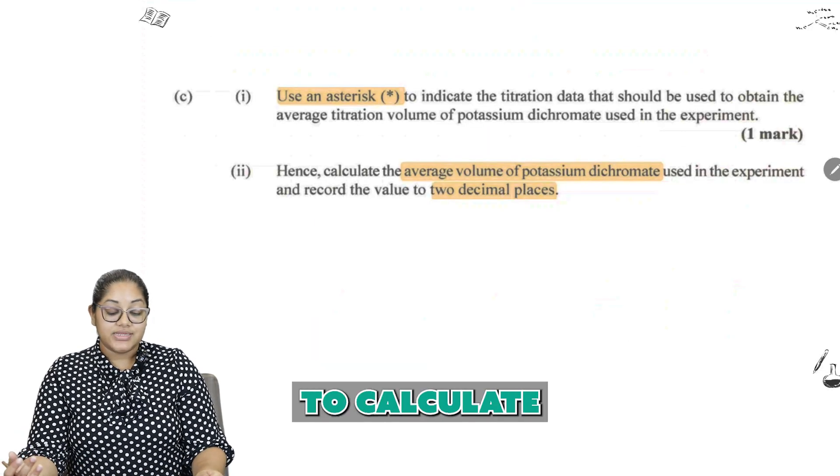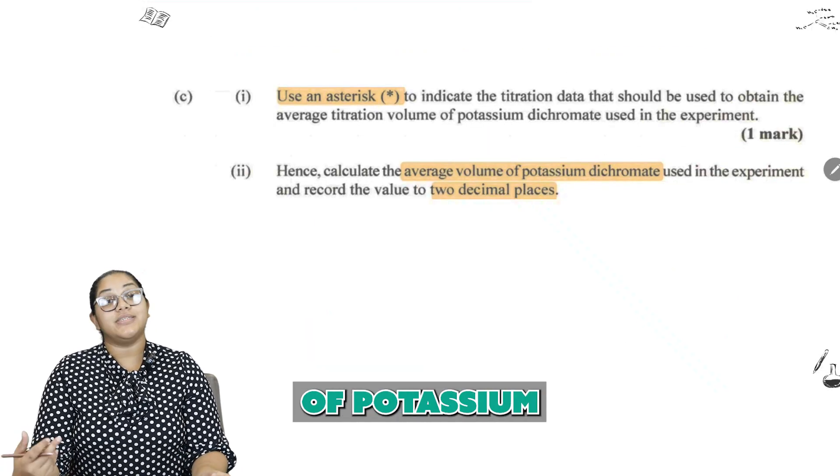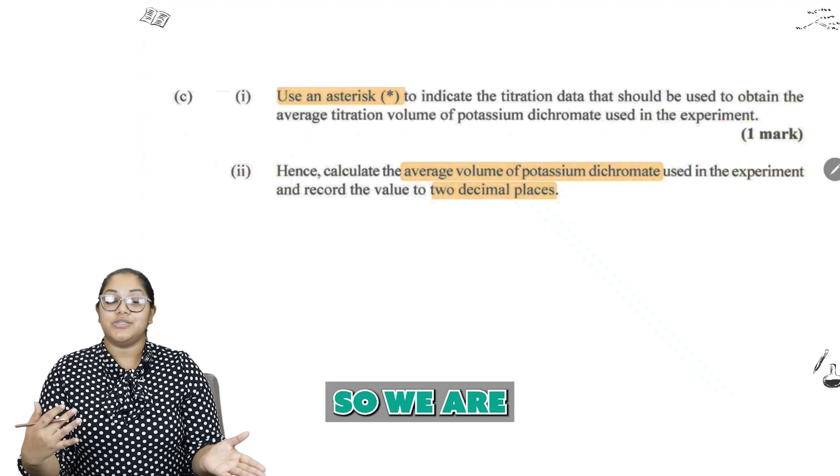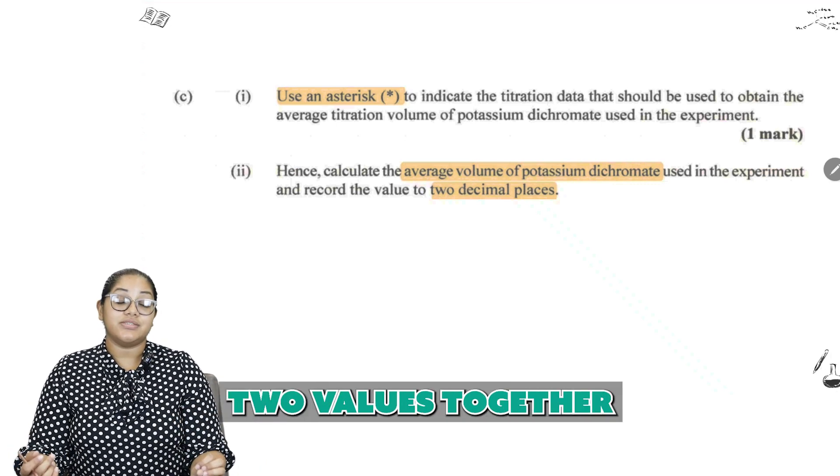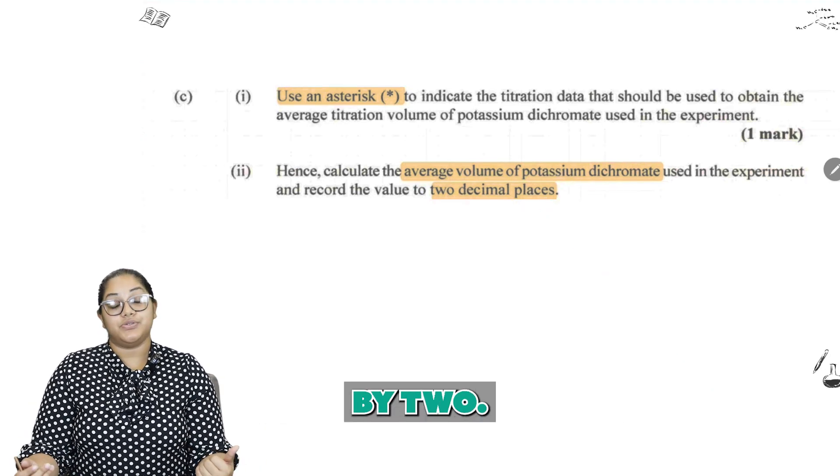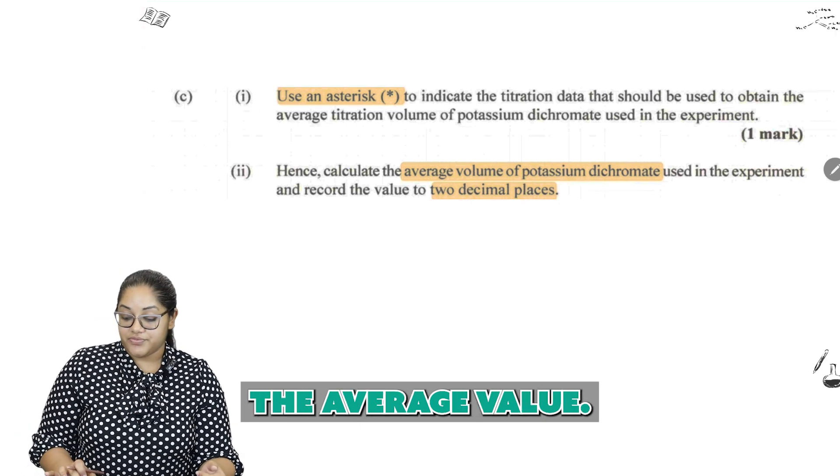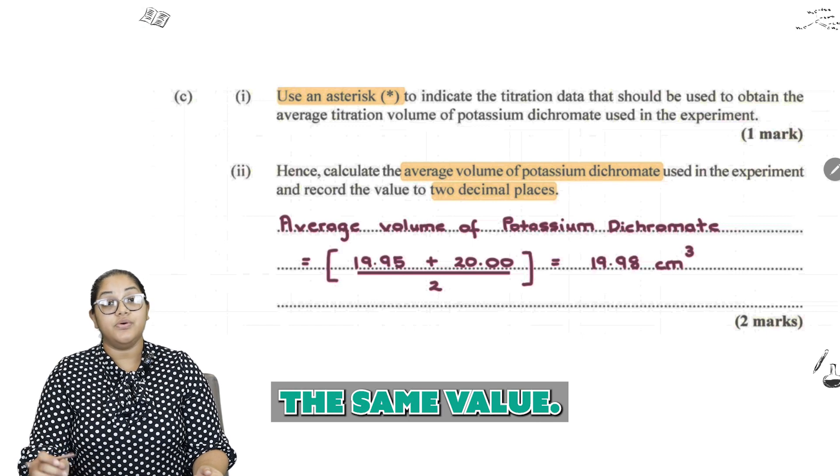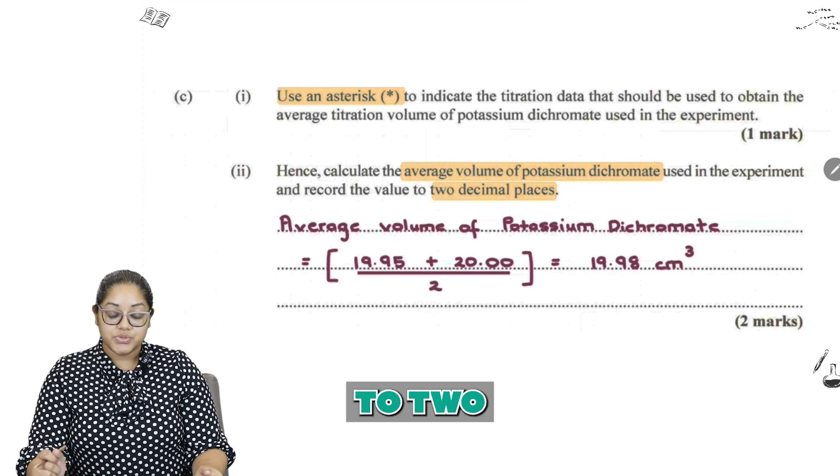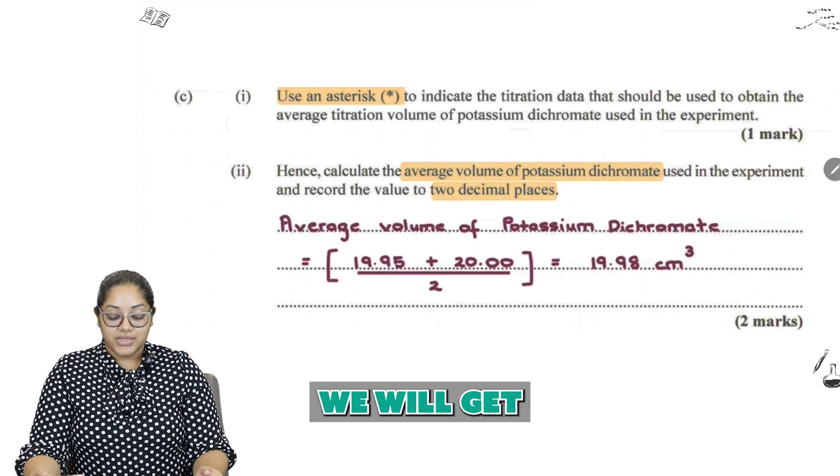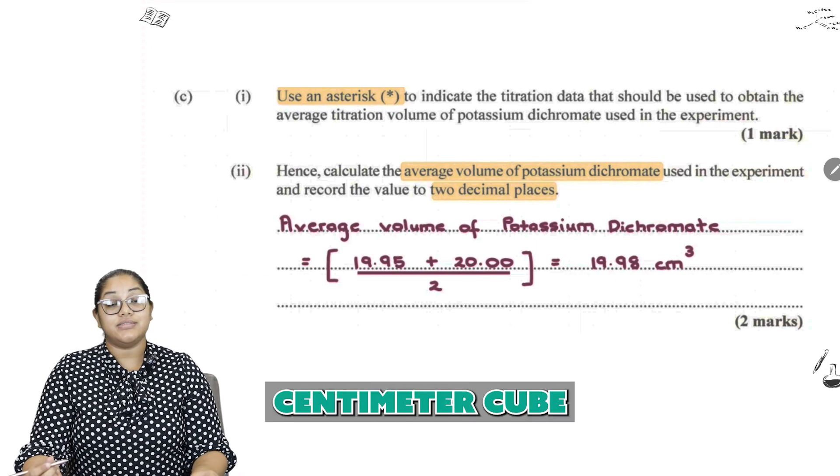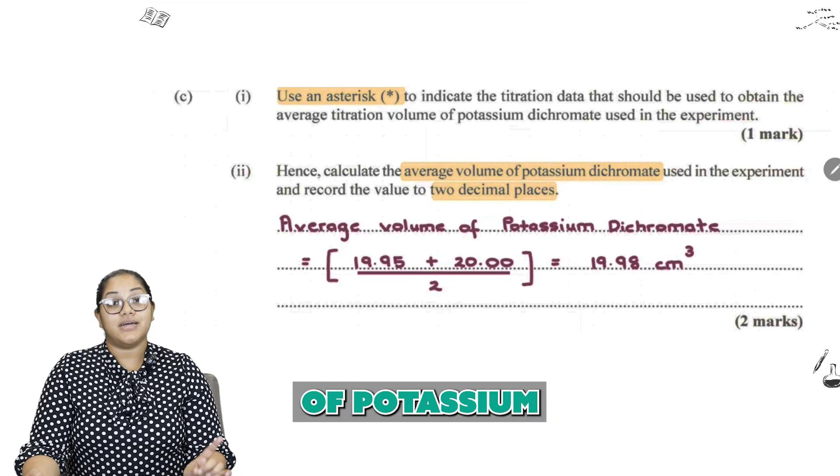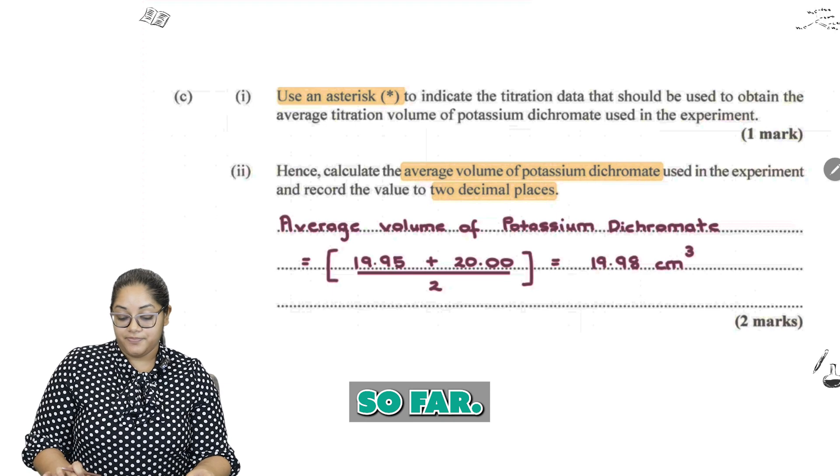We need to calculate the average volume of potassium dichromate used. So we are simply going to add our two values together and divide them by 2, just calculating the average value. So feel free again to double check and let me know if you guys got the same value, keeping our answer to two decimal places. We will get 19.98 cm cubed of potassium dichromate used so far.